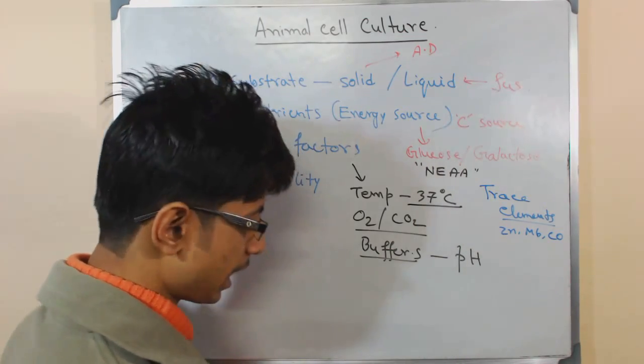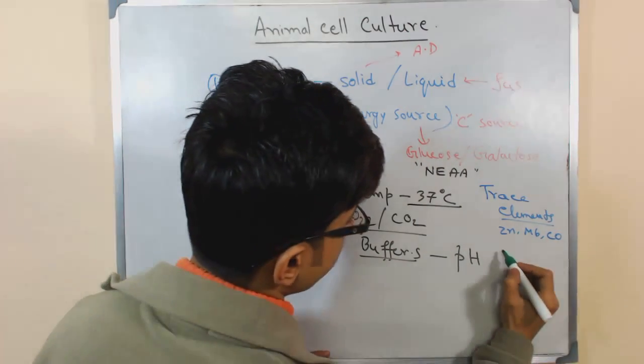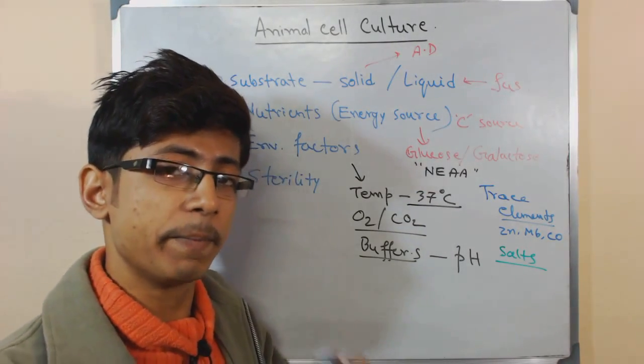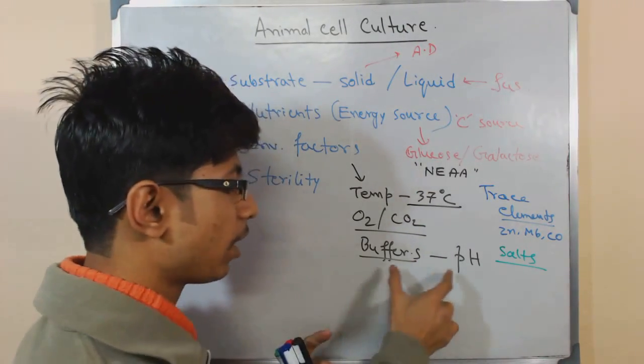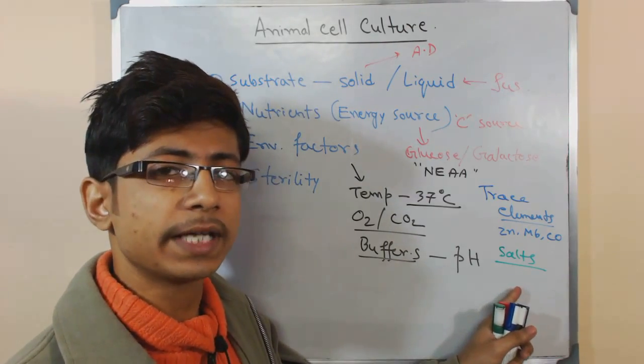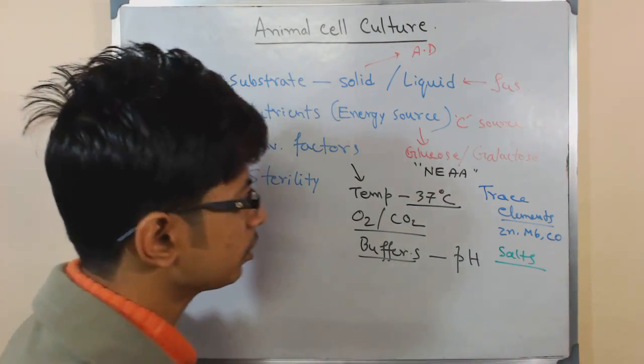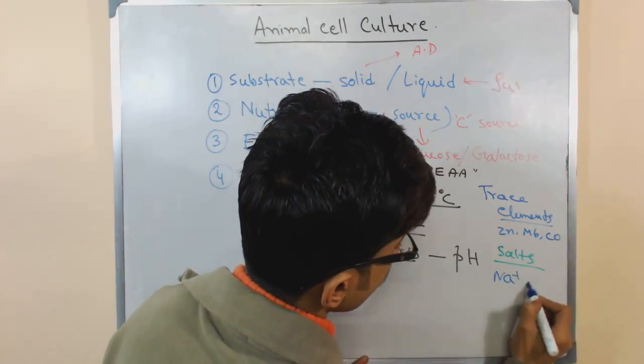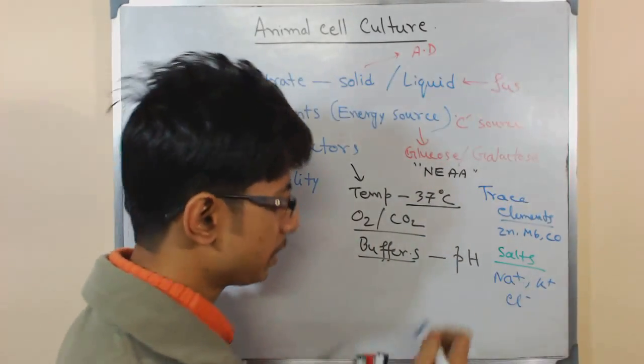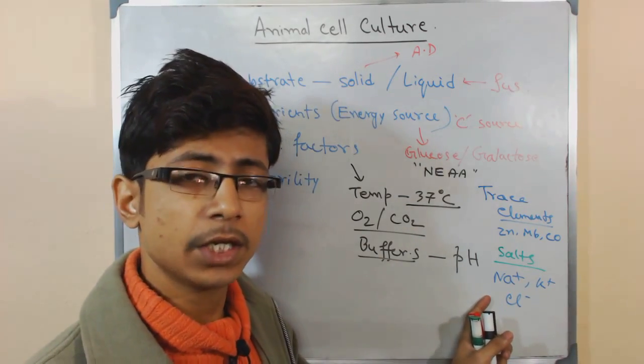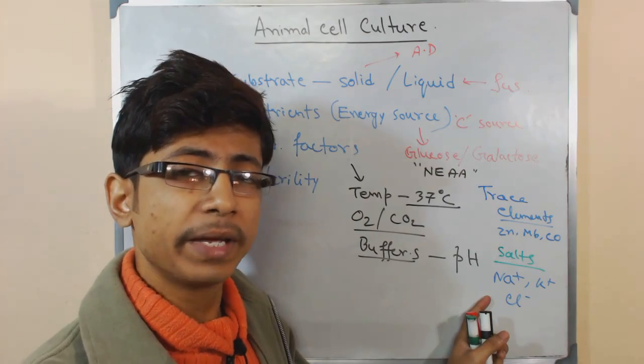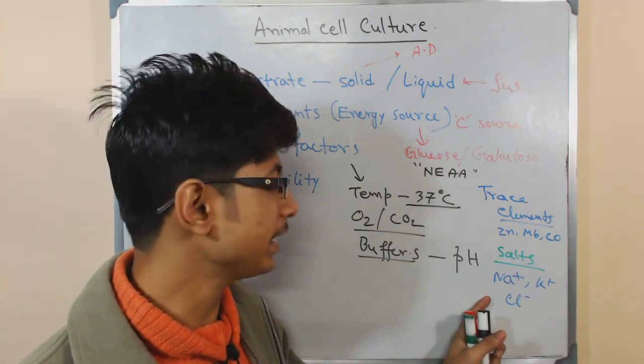We also require some major types of salts because salts provide the osmolarity - it balances the osmolarity and it also helps in the buffering. Different types of salts like sodium, potassium, chlorine - all those different salts are very important. They also act as cofactors of different enzymes which are required to function inside the cell to make the cell properly function and continuously divide.